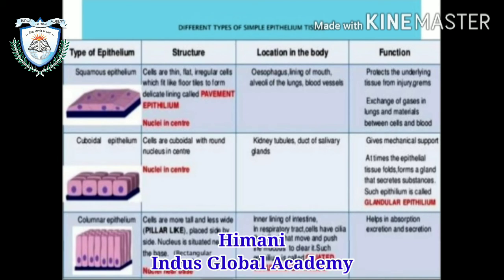Function of squamous epithelia: it protects the underlying tissue from injury and germs, and helps in the exchange of gases in the lungs and exchange of materials between cells and blood. Next, cuboidal epithelia. Structure: cells are cuboidal in shape with round nuclei present in the center. Location: kidney tubules and ducts of the salivary glands. Function: provides mechanical support; when epithelial tissue folds to form a gland that secretes substances, it is known as glandular epithelium.